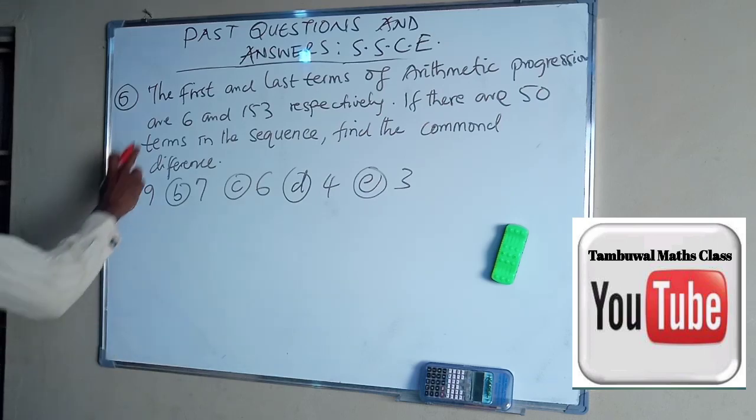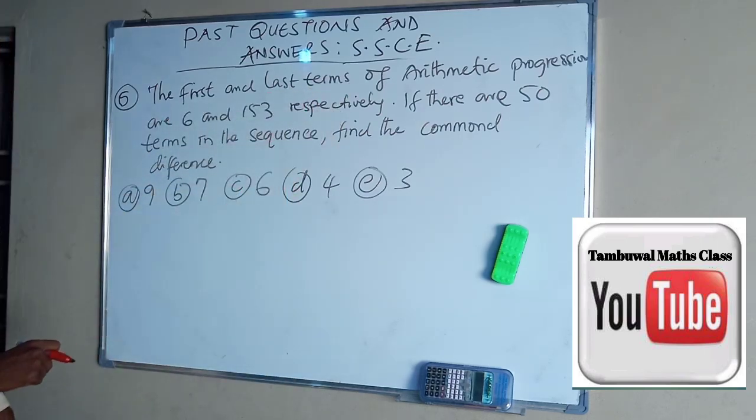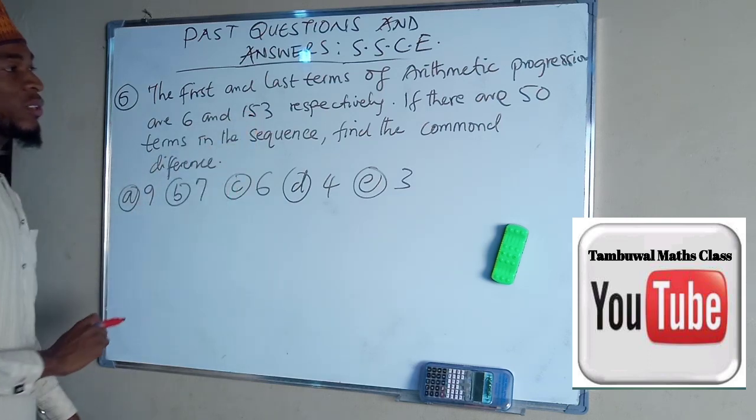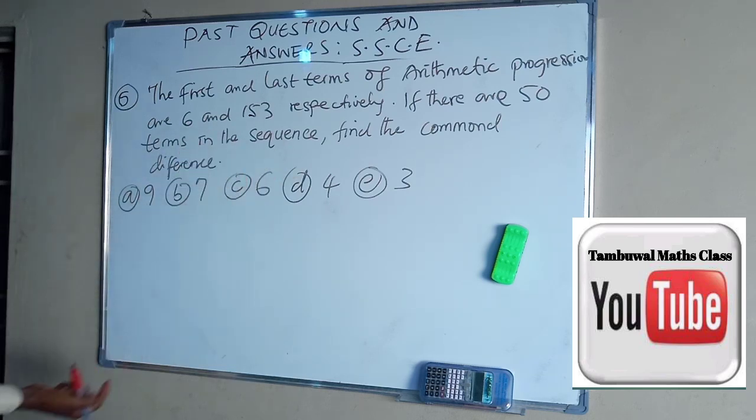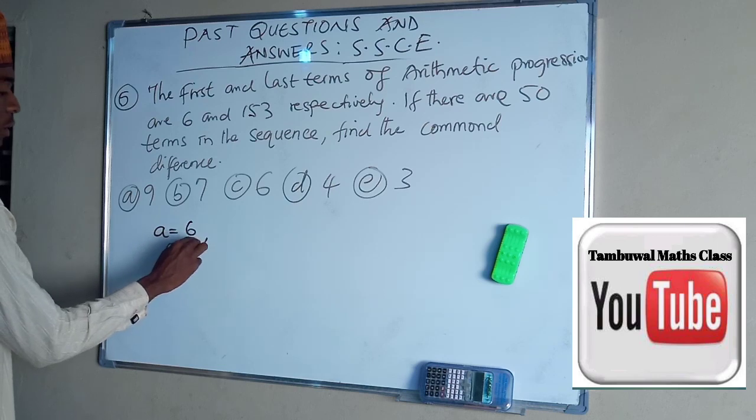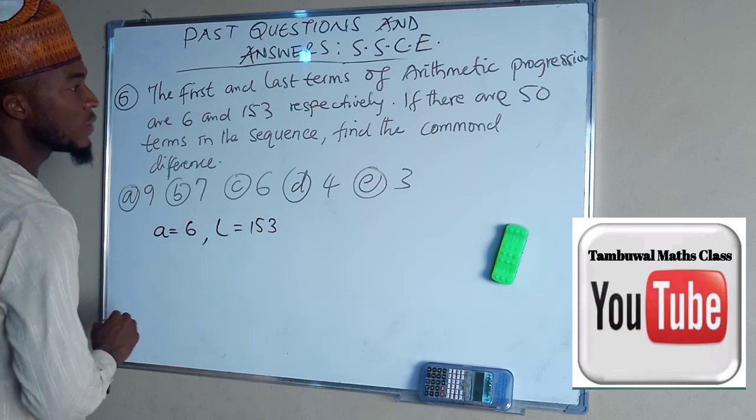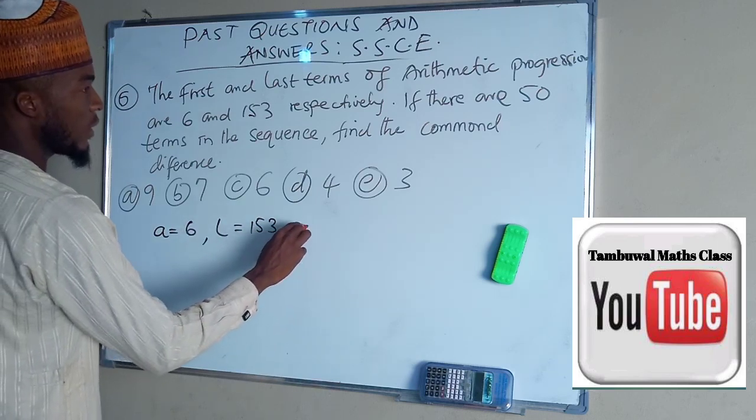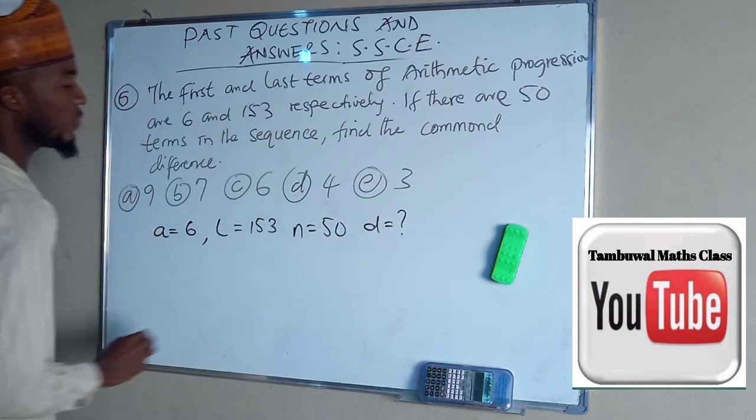Question number 6. The first and the last terms of arithmetic progressions are 6 and 153, respectively. If there are 50 terms in the sequence, find the common difference. And these are the options given to us. Now, first term is A, which is 6. So this L, the last term, is 153. N equals to 50. And D is unknown. It's what we are asked to find.